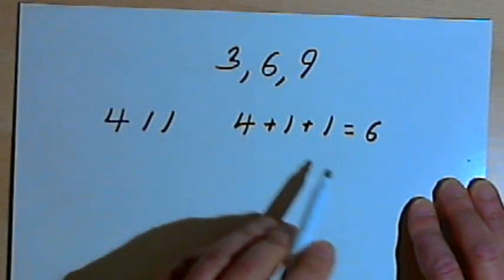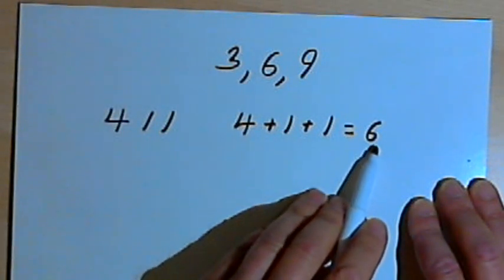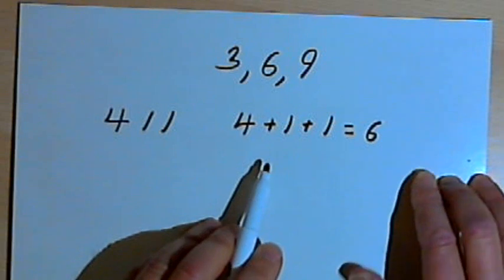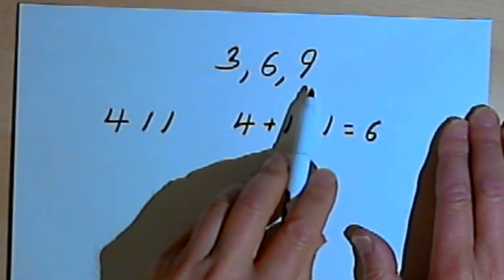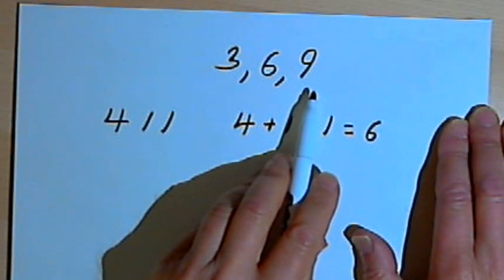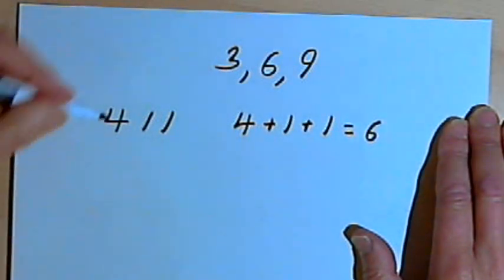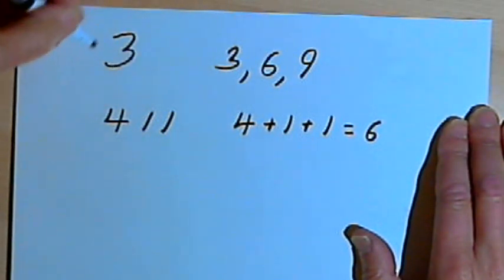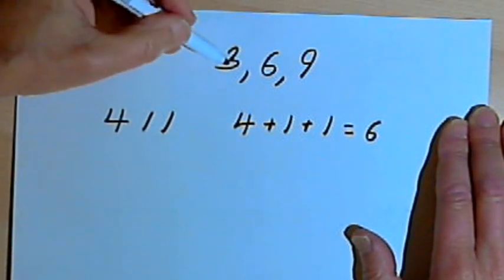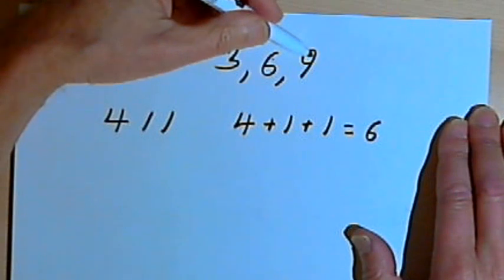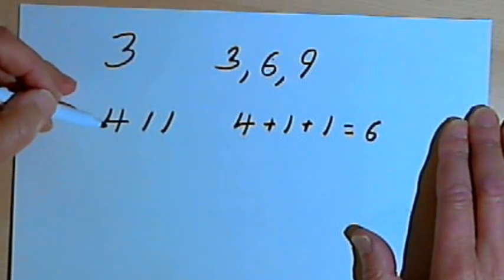Now of course, if I add up my numbers and I end up with a 9, that also means it's divisible by 3 as well as divisible by 9. So to decide whether a number is divisible by 3, add up the digits. If you end up with a 3, a 6, or a 9, that number is divisible by 3.